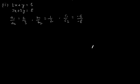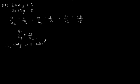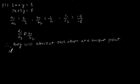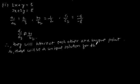So, here we can clearly say that a1 by a2 is not equal to b1 by b2. Therefore, they will intersect each other at a unique solution for this equation.